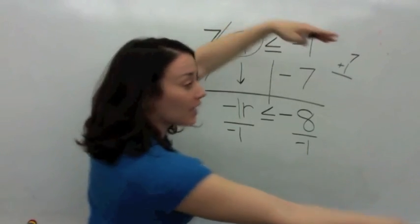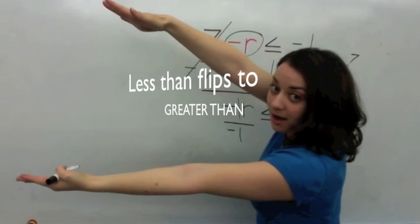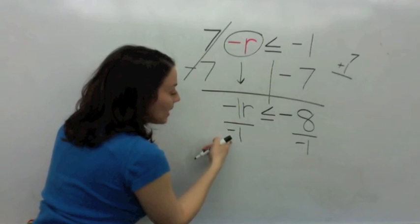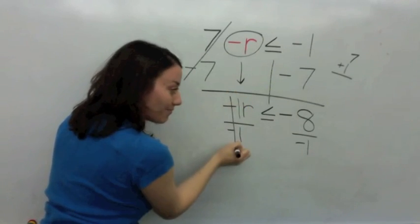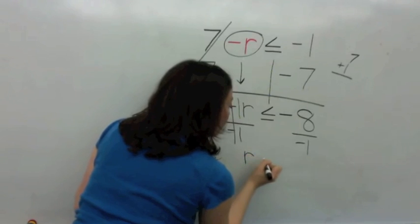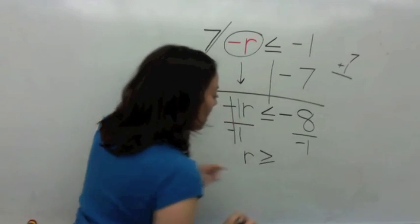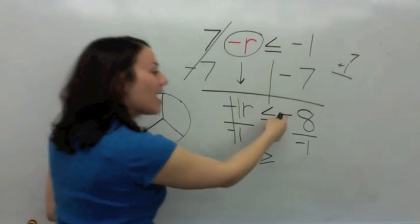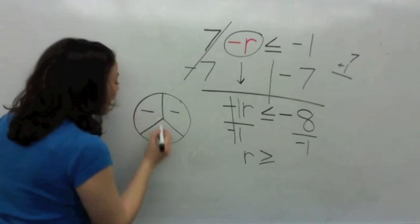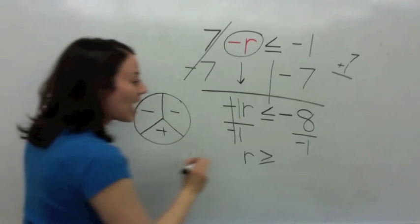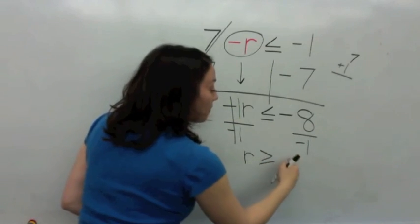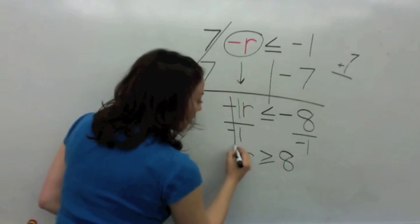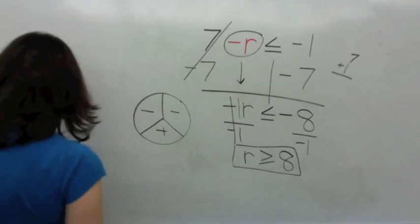And you're going to flip over to the other side, and it's going to become greater than. Very good. So, negative 1 divided by negative 1 is 1. You're left with r. Flip the sign — it is greater than or equal to. Then you have negative 8 divided by negative 1. Remember: a negative divided by a negative is positive. 8 divided by 1 is 8. So your inequality is r is greater than or equal to 8.